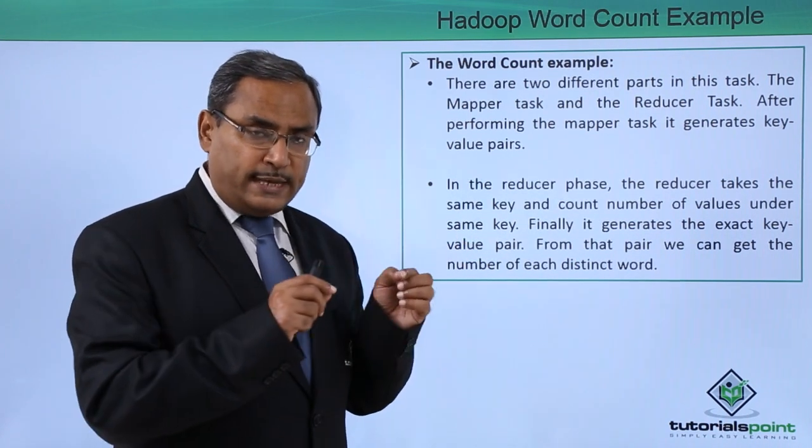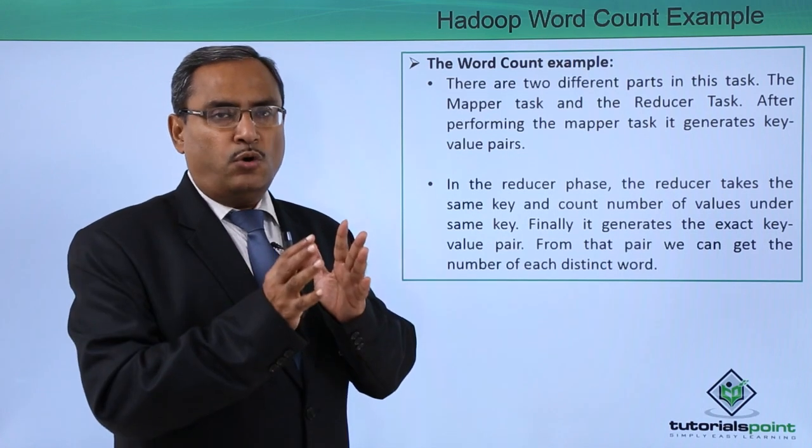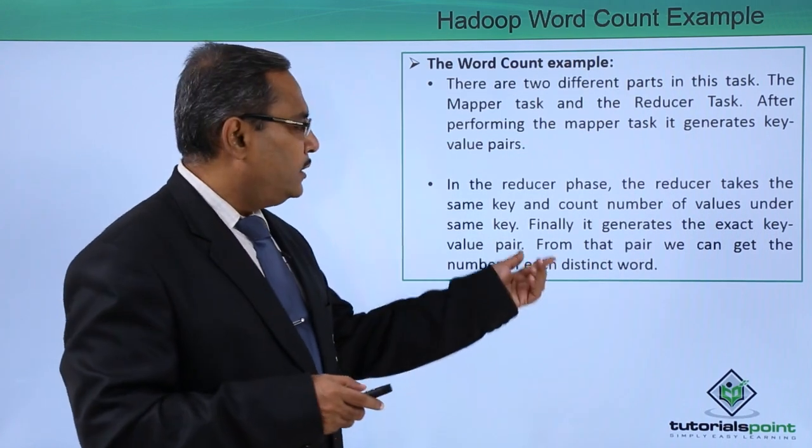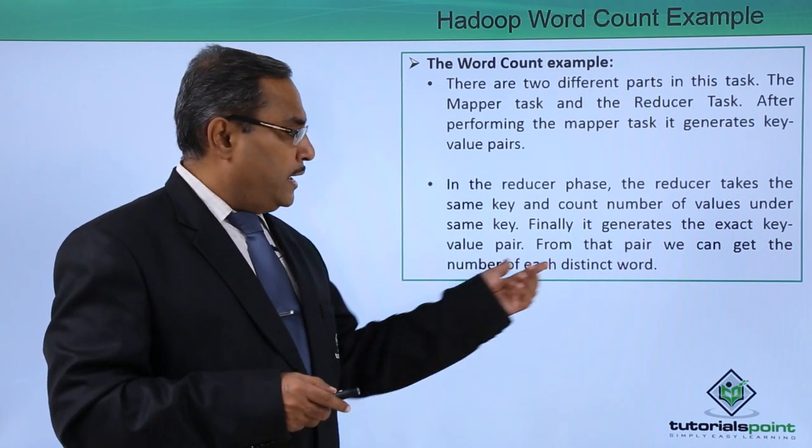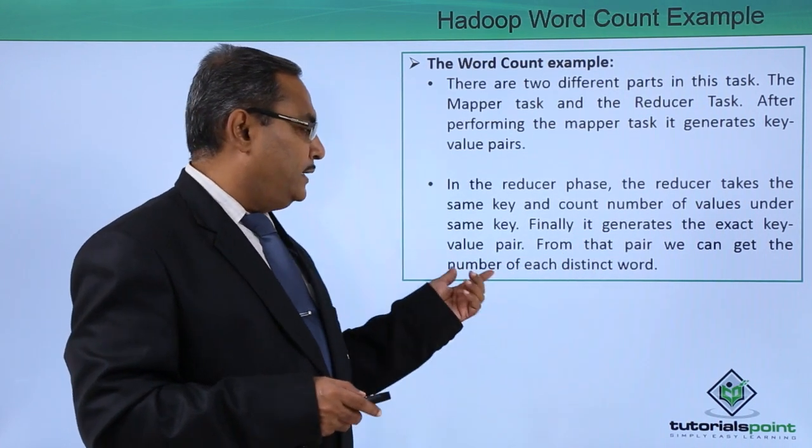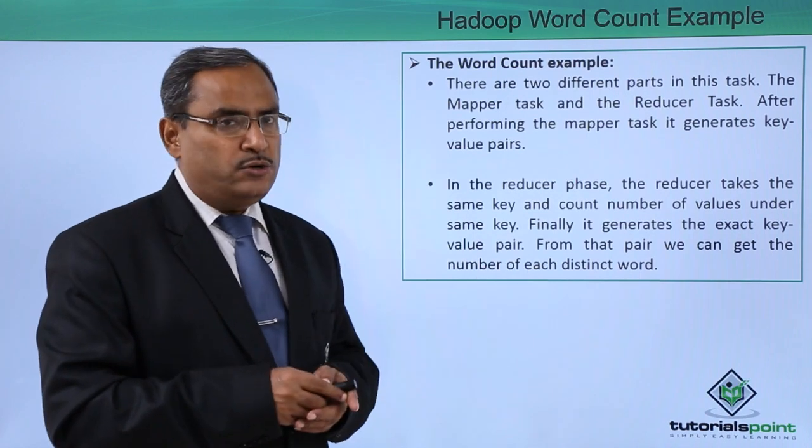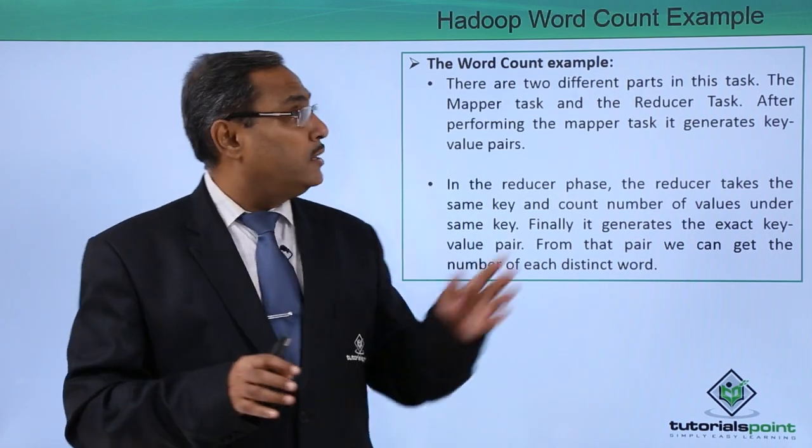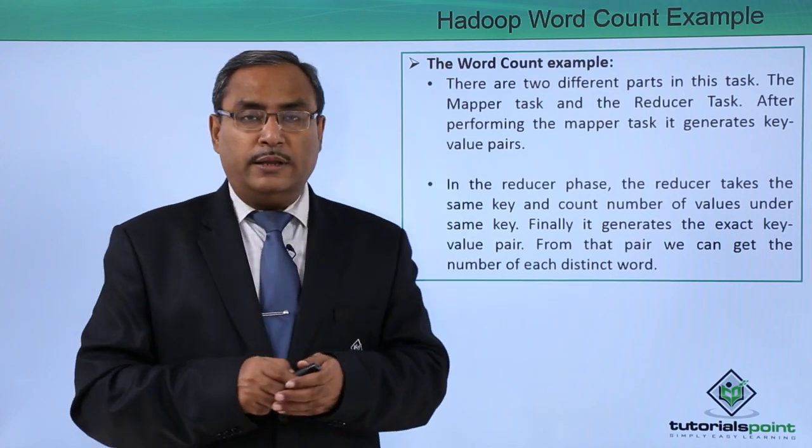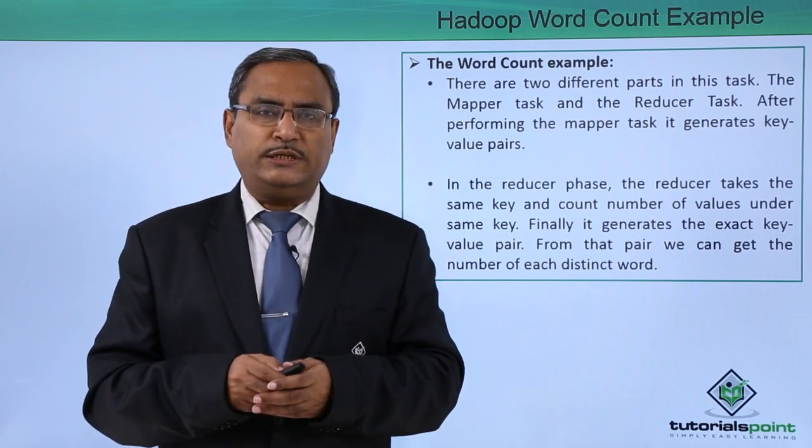Whenever we have the same key, then the reducer will just go on adding the respective counts. Finally, it generates the exact key value pair, and from that pair we can get the number of each distinct word existing in the given input. That is our word count example in Hadoop. Thanks for watching this video.